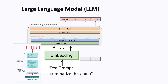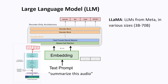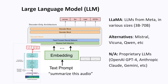A popular choice for the large language model is the LLaMA series of models from Meta. These models come in various sizes from 3 billion to 70 billion parameters, and are open source and free to use. Some popular alternatives include the Mistral models, Vicuna, and Qwen, among many others. However, proprietary LLMs like OpenAI's ChatGPT, Anthropic Claude, and Google's Gemini cannot be used for speech LLMs, because the code and weights are not available and we are limited to what we can do through the API, although all of these models may provide speech capabilities in the future.